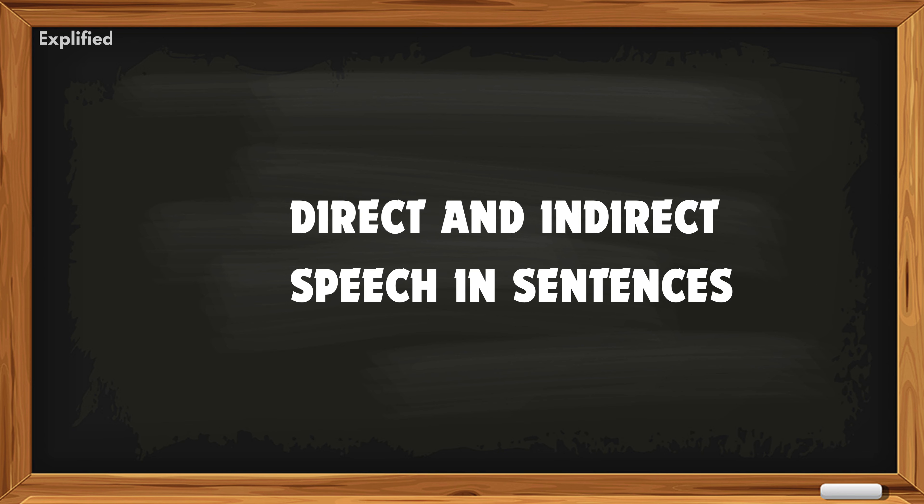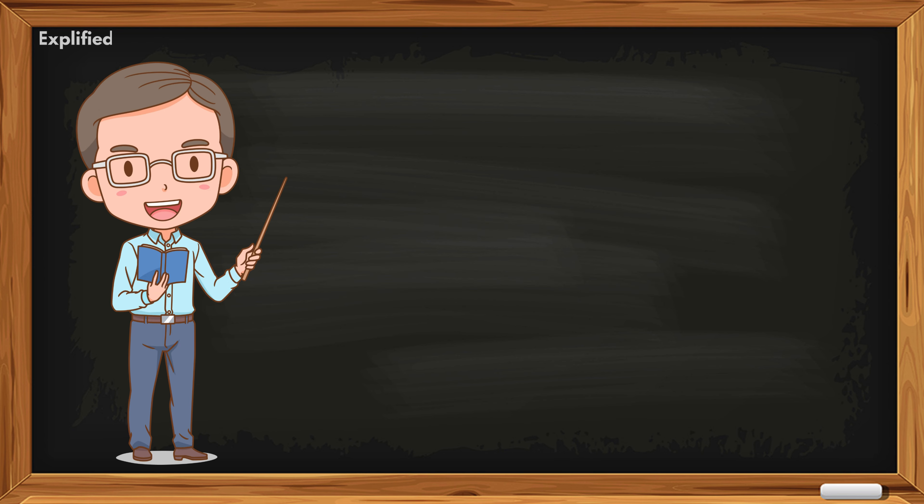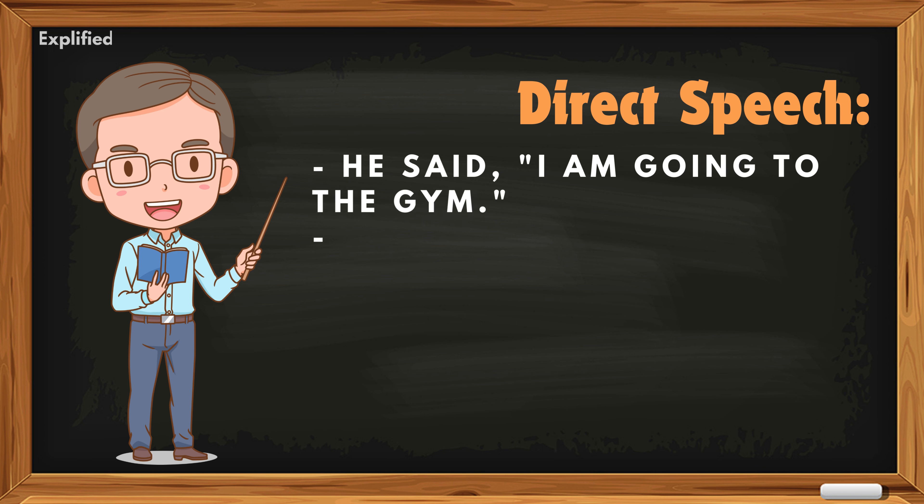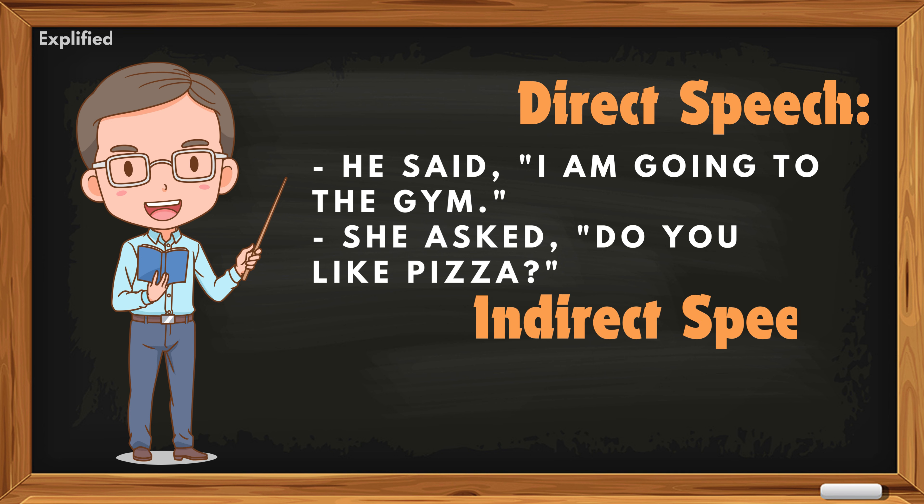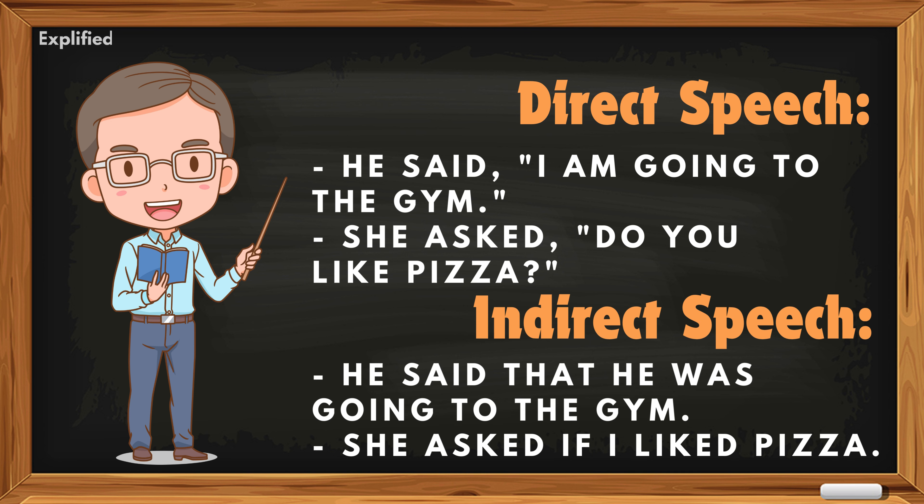Direct and indirect speech in sentences. Direct speech: He said, I am going to the gym. She asked, do you like pizza? Indirect speech: He said that he was going to the gym. She asked if I liked pizza.